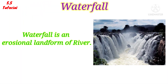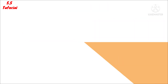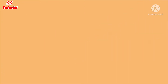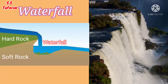Waterfall is an erosional landform of a river which forms due to a change of stream gradient and a vertical or nearly vertical drop of water in the course of the river. When a stream of water descends vertically or flows in a series of steps due to sudden changes in the slope along the length of the river, then it is called a waterfall.